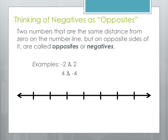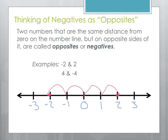Now let's introduce the concept of thinking of negative numbers as opposites of their positive counterparts. Two numbers that are the same distance from 0 on the number line but on opposite sides are called opposite numbers. On the number line with 0, 1, 2, 3 and negative 1, negative 2, negative 3, we can think of 2 and negative 2 as opposites — they're both two spaces away from 0. The opposite of 2 is negative 2, the same distance away from 0.